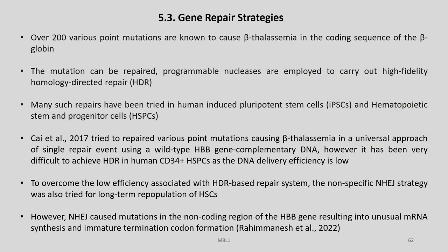Another strategy for thalassemia therapy is the gene repair strategy. Over 200 various point mutations are known to cause beta thalassemia in the coding sequences of the beta globin gene. The mutations can be repaired using programmable nucleases to carry out high-fidelity homology-directed repair. Many such repairs have been tried in human induced pluripotent stem cells and hematopoietic stem and progenitor cells. Kai et al. in 2017 tried to repair various point mutations causing beta thalassemia using a wild-type HBB gene complementary DNA. However, it has been very difficult to achieve HDR in human CD34+ HSPCs as DNA delivery efficiency is low.